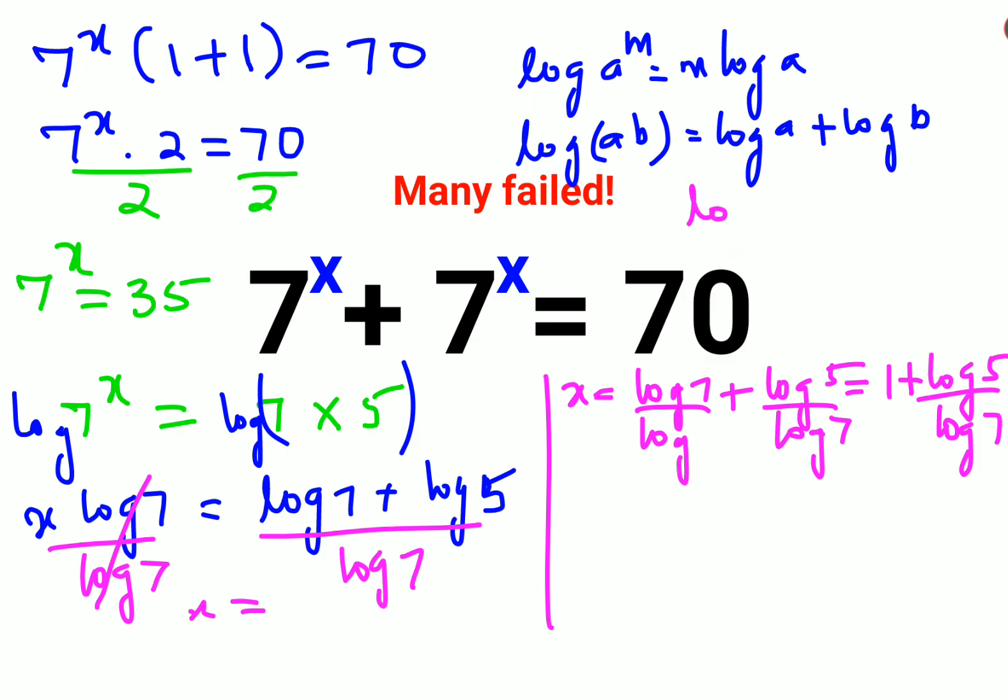The other answer can be written using the property that log of a upon log of b can be written as log of a to the base b. So the other answer would be 1 plus log 5 to the base 7.